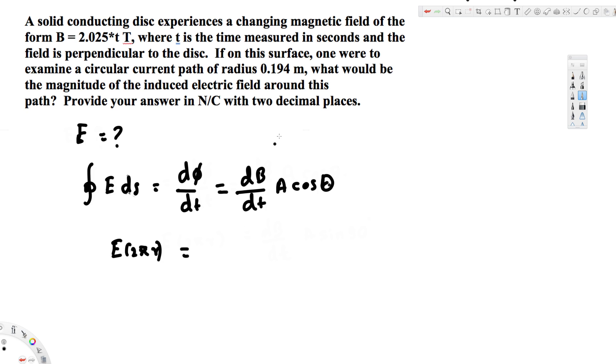We're going to take the derivative of this magnetic field with respect to t. When we do that, this t will become 1, so we'll end up with 2.025. But before I do that, let's write the equation first. Here we're going to have dB/dt and the area of the circle.